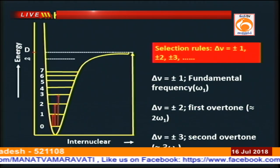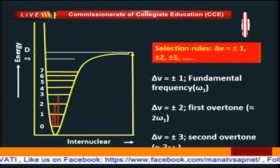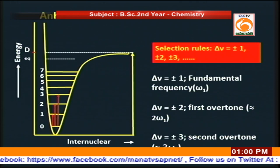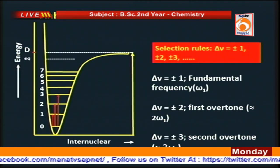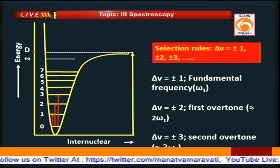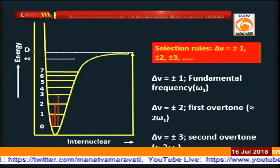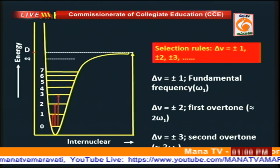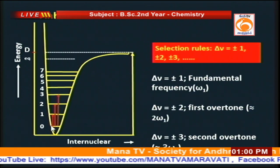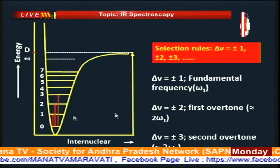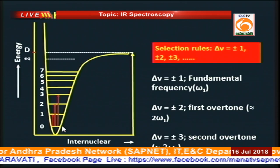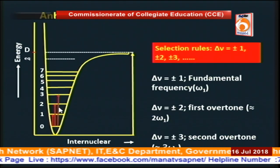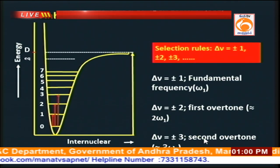For an anharmonic oscillator, the selection rules are Δv = ±1, ±2, ±3. When the transition occurs from 0 to 1 (ground state to first excited vibrational state), it is the fundamental frequency. From 0 to the second excited state is the first overtone; from 0 to the third is the second overtone. Generally more bands are observed in the spectrum than the number of fundamental vibration bands because of combination bands and difference bands — for example, CO₂ should show only three bands but more are observed.